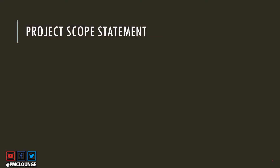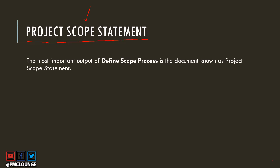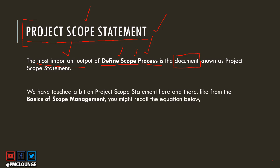By now you already know that project scope statement has something to do with the scope management knowledge area. The most important output of the Define Scope process is the project scope statement. The third link in the description will take you to a video on the Define Scope process. Project scope statement is a document — it is the most important output of the process known as Define Scope.